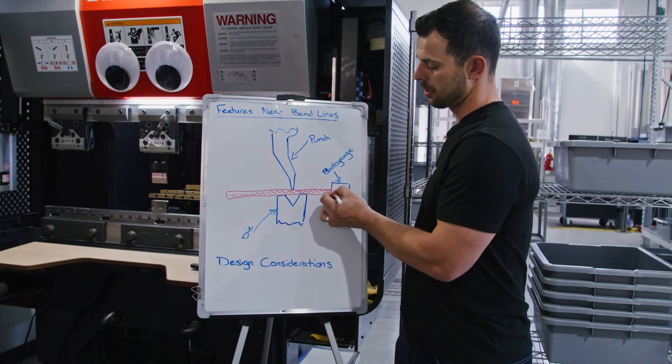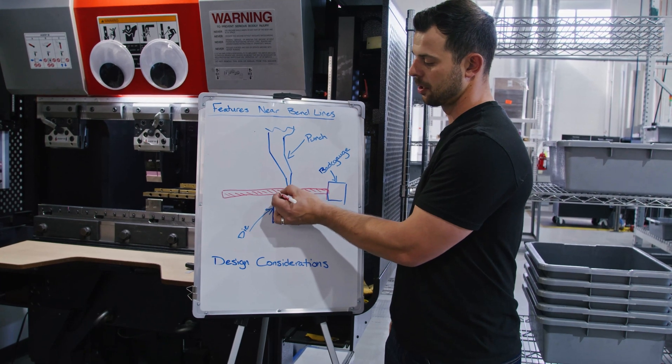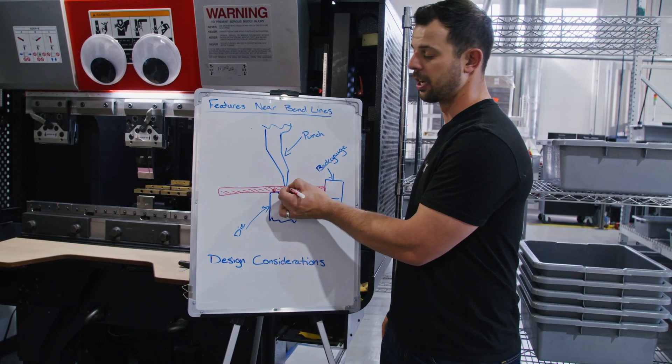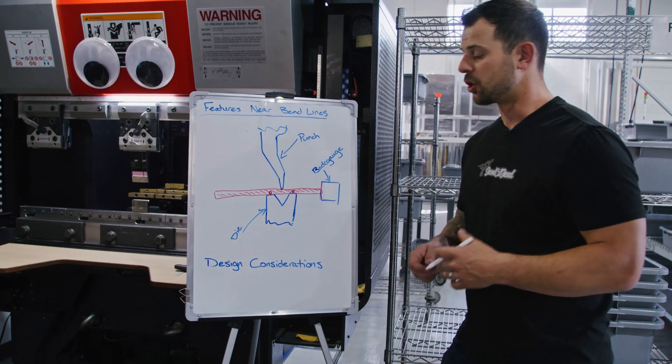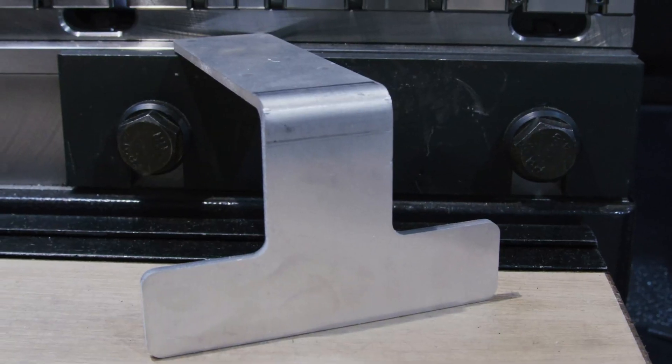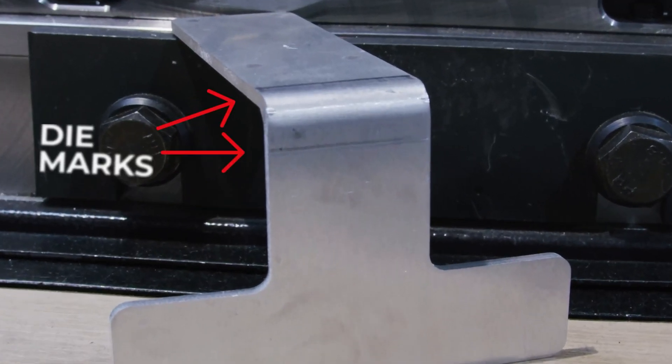So we have three main contact points, not really including this back gauge. We have one here, one here, and one at the punch. So when you guys get your parts in the mail that are being bent, you're going to end up seeing a witness mark, which are often referred to as die marks.